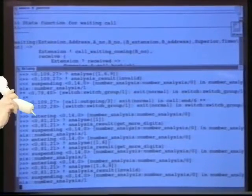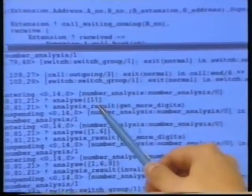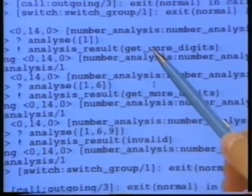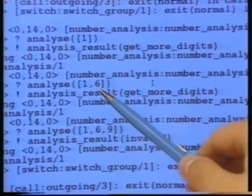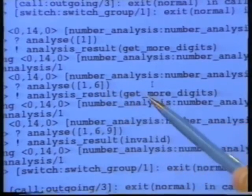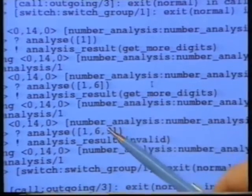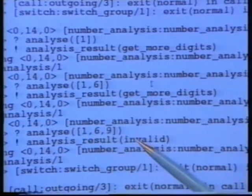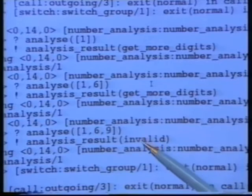I'll now dial an incorrect number: one, six, nine. Here again we see a symbolic trace of the communications to and from the number analyzer. It got the request to analyze the digit one and returned 'get more digits.' Then it got the request to analyze one, six, and again returned 'get more digits.' Finally, it got the request to analyze one, six, nine — but this time it returned the result 'invalid', as this number is invalid.